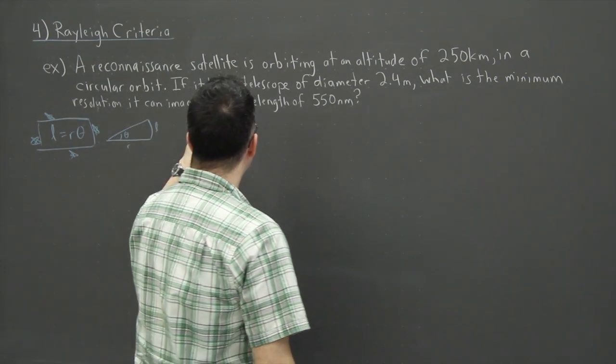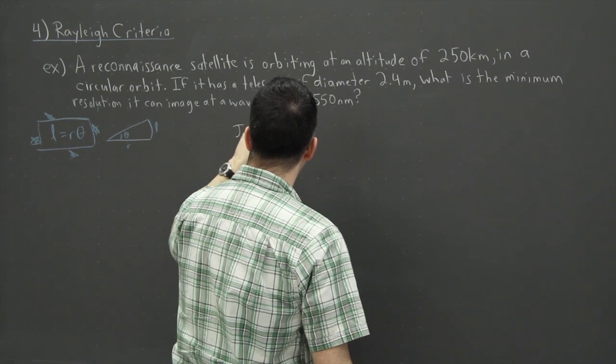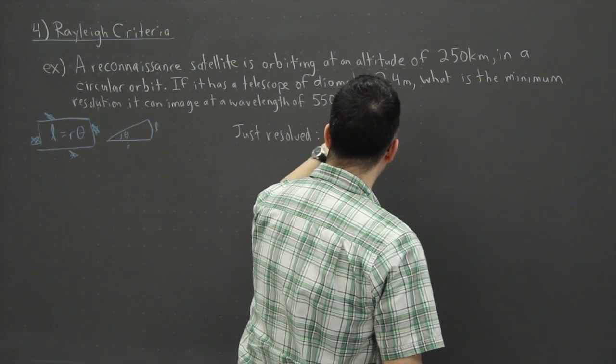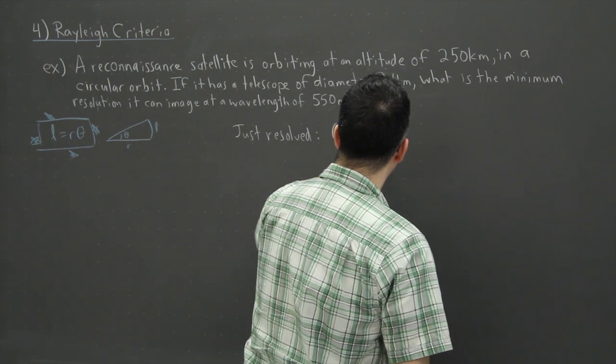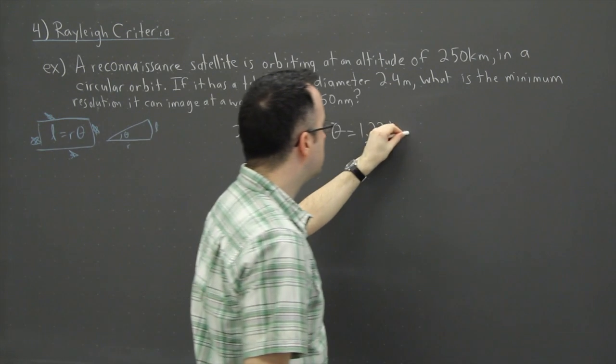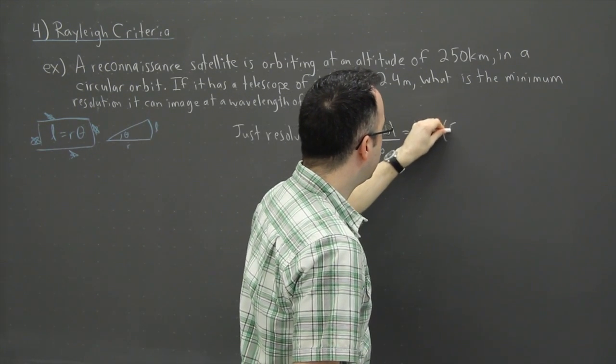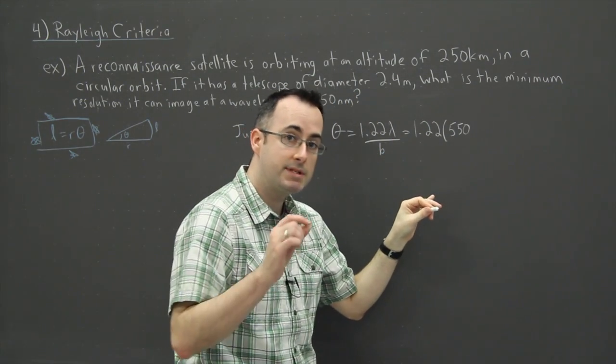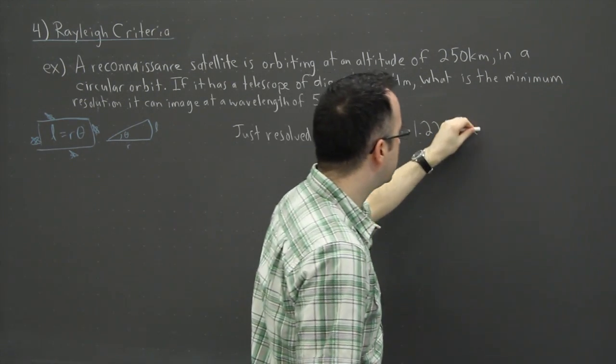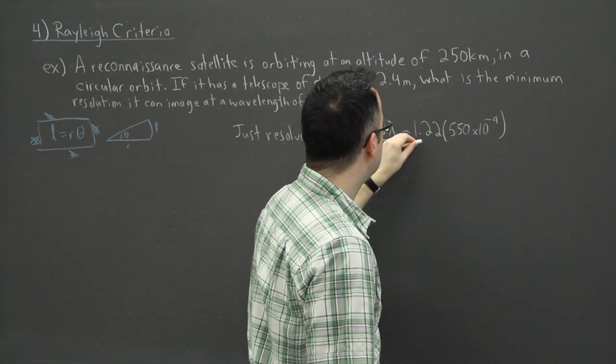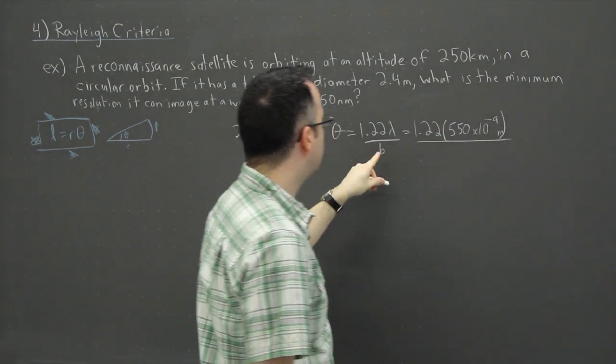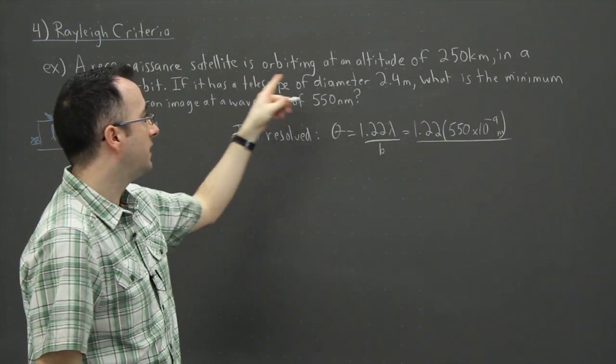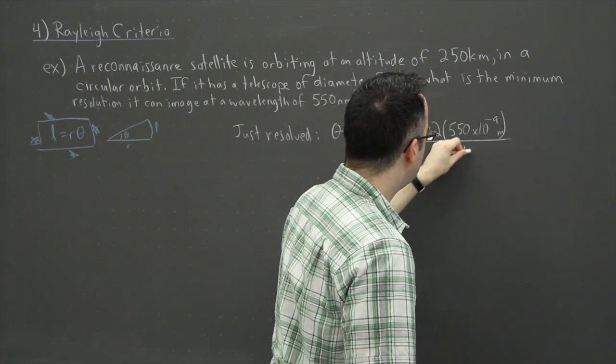But let's take a look at what the Rayleigh criteria is. So first of all, we know that two objects are just resolved - remember, we looked at this just earlier - just resolved if the angle is equal to 1.22 lambda over b. So then we just put in the numbers. So we have 1.22 times the wavelength, which is 550. And you have to remember, a nanometer is times 10 to the minus 9. So I'm going to say that there - meters. Divide that by, I need to have my size of the aperture. So in this case, that's going to be my telescope width. So it's going to be 2.4 meters.